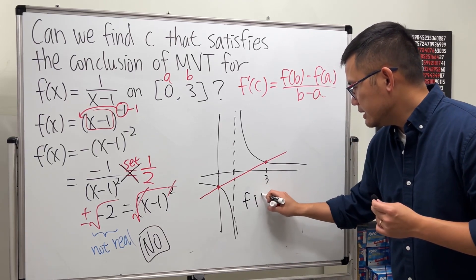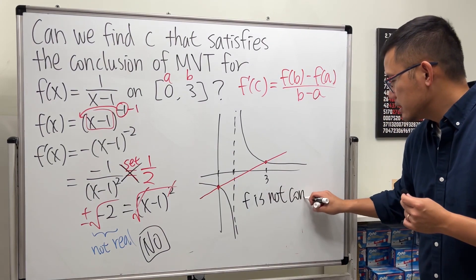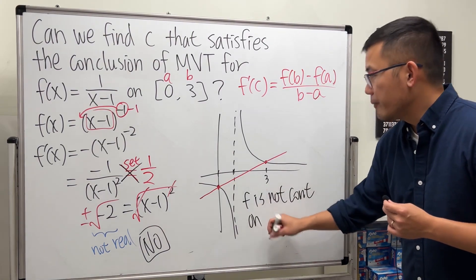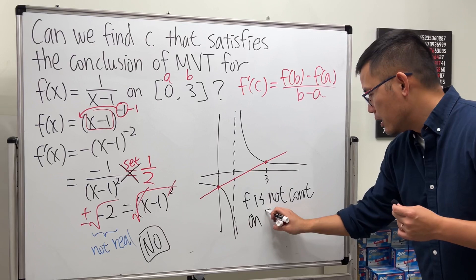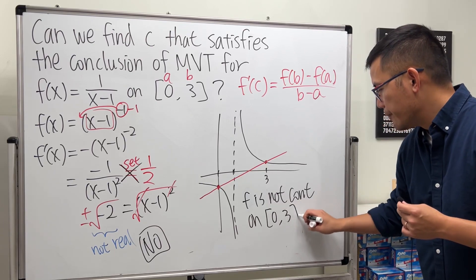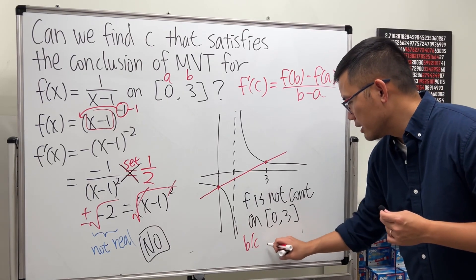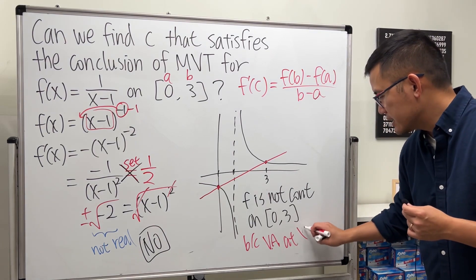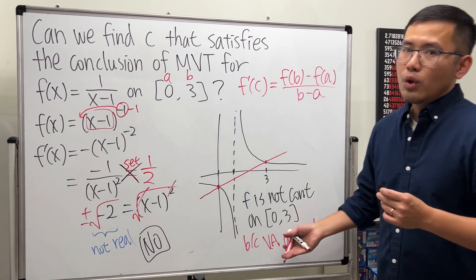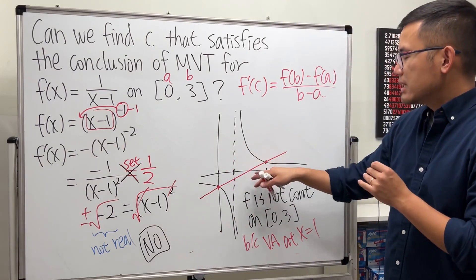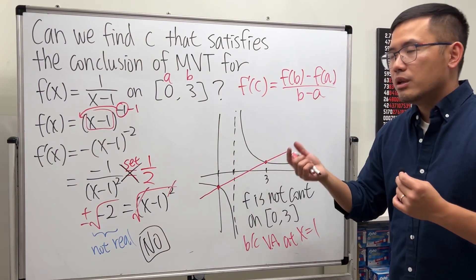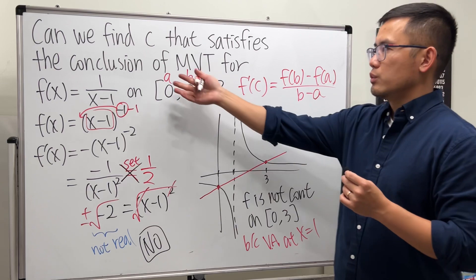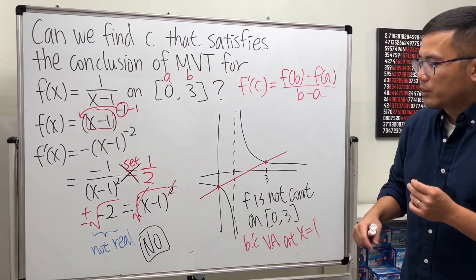f is not continuous on the interval that we care right here. And you can also mention that because of a vertical asymptote at x equals 1, that's why when you don't satisfy the assumption of the mean value theorem, of course, we might not get the conclusion of the mean value theorem.